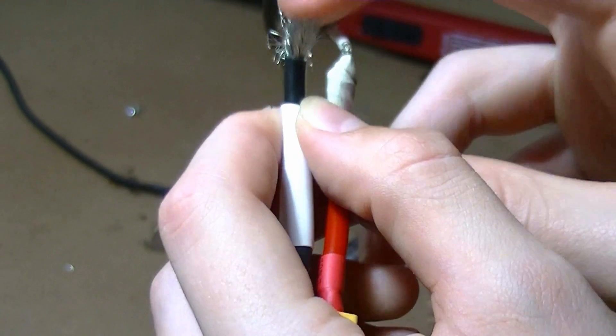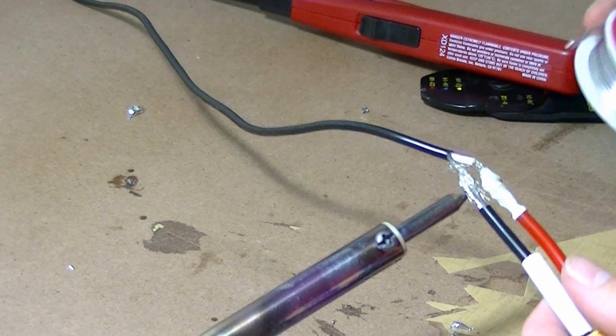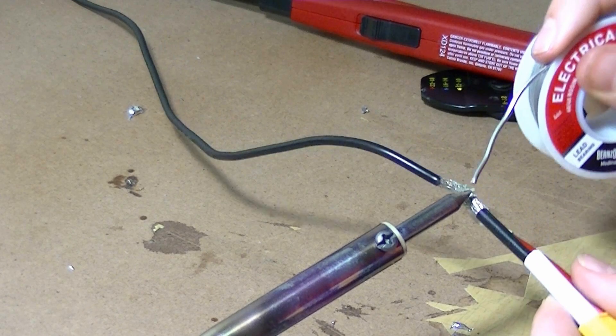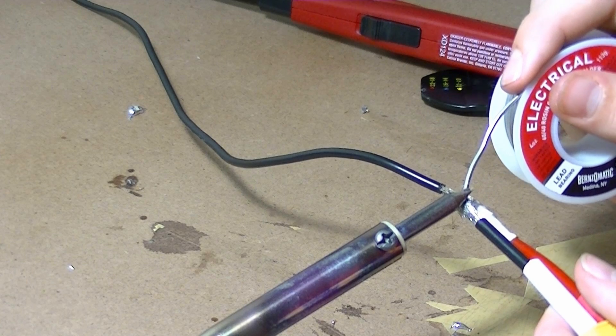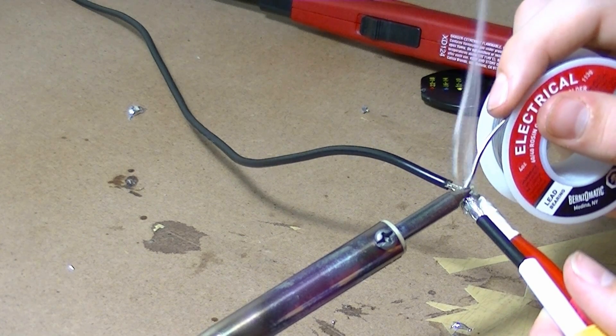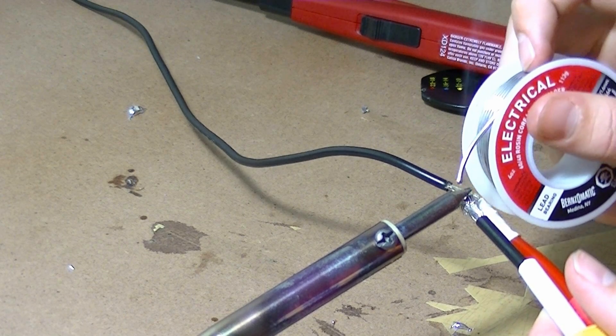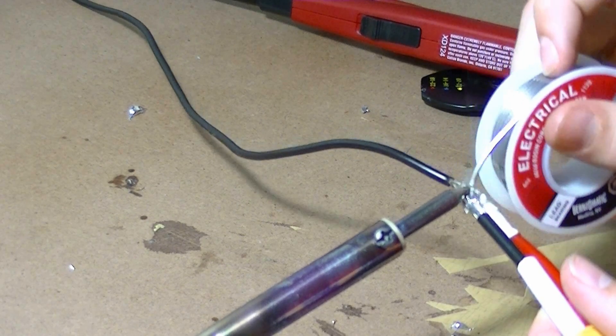Push them together and twist it. You can solder it just like you did with the positive. Once it's hot enough, make sure you put enough solder on because if you don't have enough, it won't be a strong solder joint.